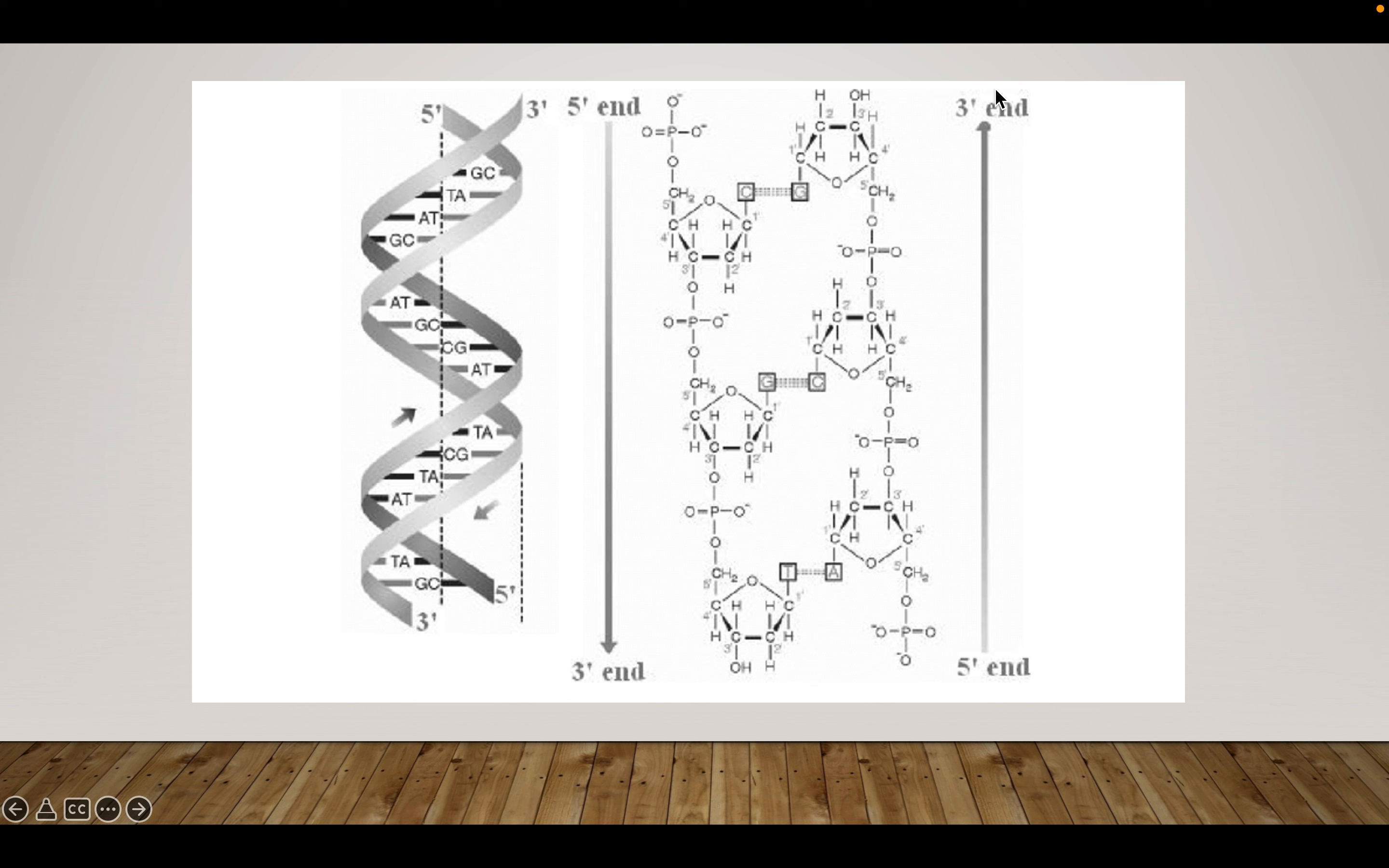Up here, you have five prime on this side. On this side, you have three. Down here, you have five. Down here, on this side, you have three. So this is what's called anti-parallel. They are parallel. They're running in the same direction, or they're adjacent to each other, but they're anti-parallel because one is going from three prime to five prime. One is going three prime to five prime, but in the opposite direction. So hopefully this makes sense.